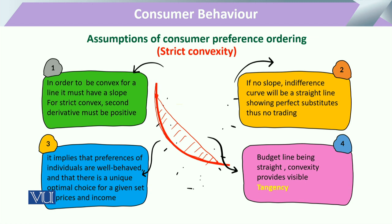Agar slope nahi hogi toh woh straight line hai. Aur agar ham straight line ki baat karenge, toh is straight line ke upar koi bhi apna indifference curve draw kar raha hai, toh iska matlab hai ke jitni substitution hai woh perfect substitution hai.